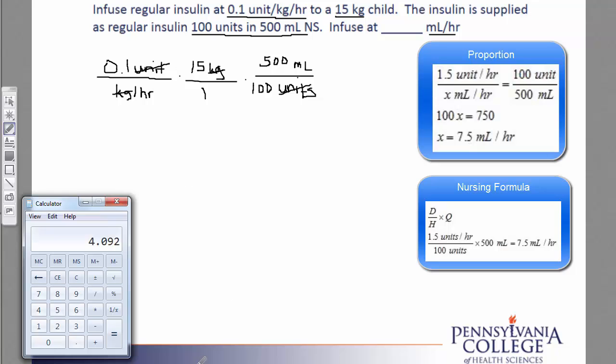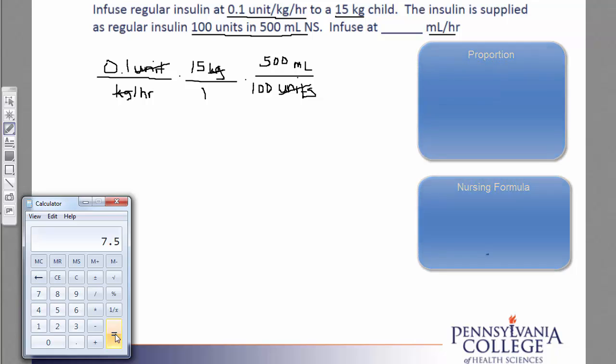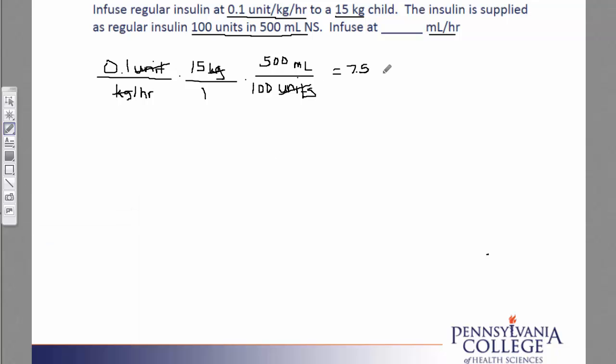So we'll go to our calculator. Our first number is 0.1. Multiplying that times 15. And also times 500. We'll divide that by the 100 that's on the bottom of our fraction. And we get our answer of 7.5 milliliters per hour. Milliliters per hour is typically rounded to the tenths. And since this number came out in the tenths, we don't have to do any rounding at all.